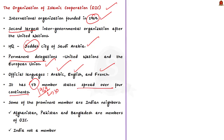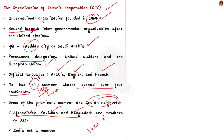Some of the prominent members of OIC are India's neighbors — for example, Afghanistan, Pakistan, and Bangladesh. They are all members of OIC. The OIC calls itself as a collective voice of the Muslim world, and it tries to safeguard and protect the interests of the Muslim world. That is the basic objective of this organization.